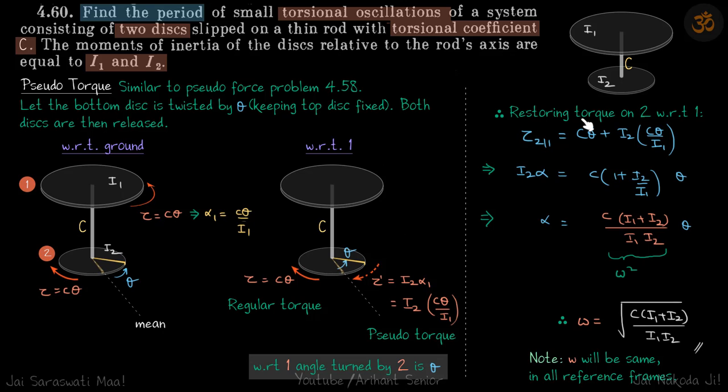Now let's use this concept in solving our problem. If we turn the bottom disk by theta again, the restoring torque on two with respect to one will be the net torque—that will be C theta plus I2 times C theta by I1. So this tau of two with respect to one we can write as I2 alpha. So alpha you will get in terms of some constant times theta. That's an equation of SHM where this is omega square. Therefore, the frequency will be root of this.